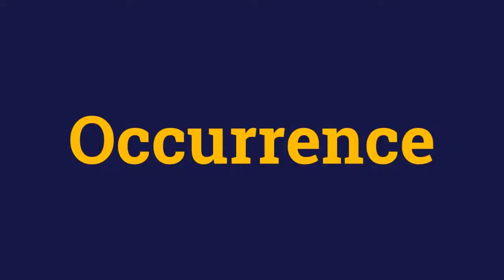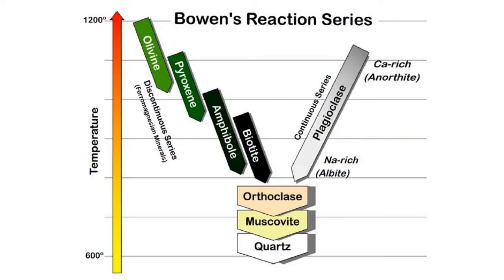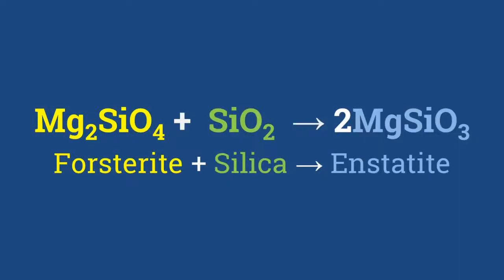Coming over to the occurrence of pyroxenes: pyroxenes are found in igneous rocks. They are a part of Bowen's reaction series and are formed when melt reacts with olivine during cooling of magma. For example, this reaction shows the formation of actinolite pyroxene from forsterite olivine.